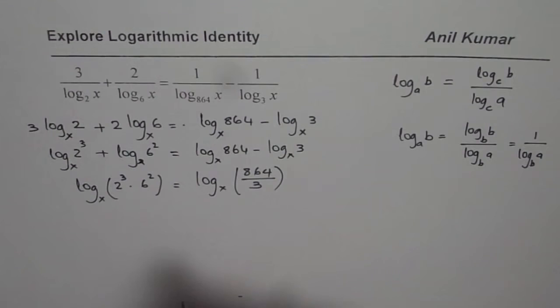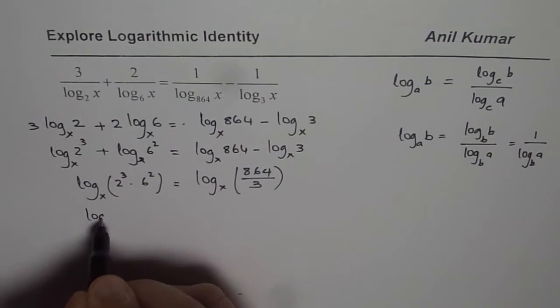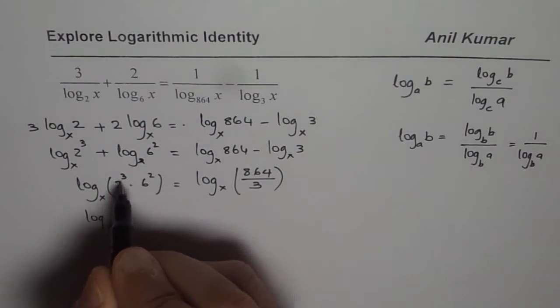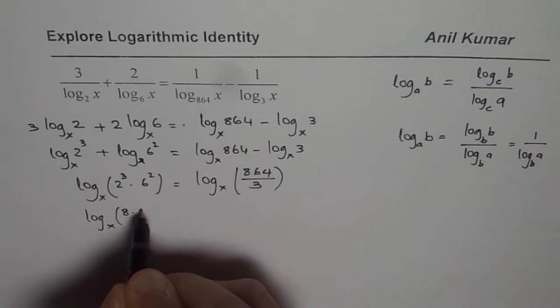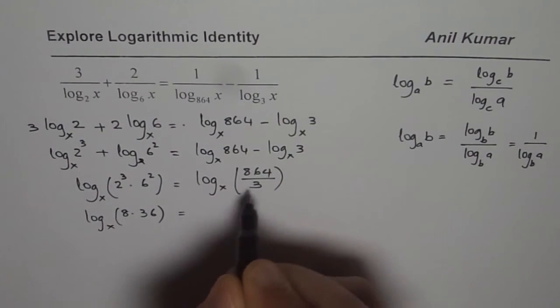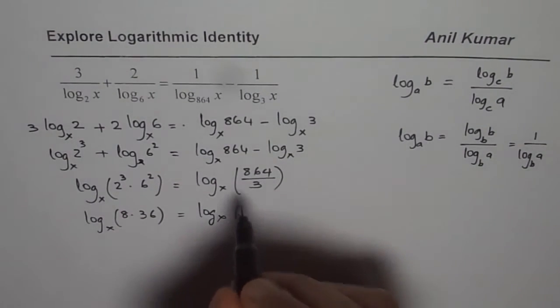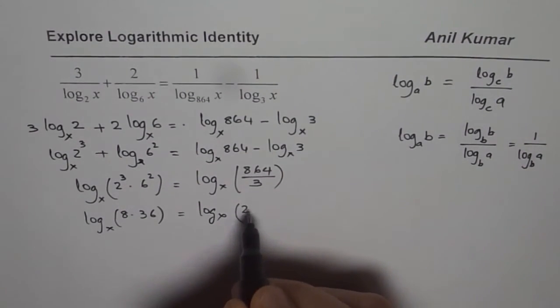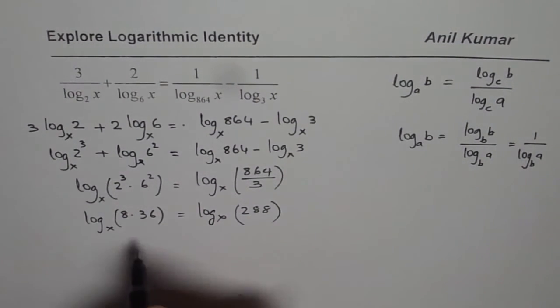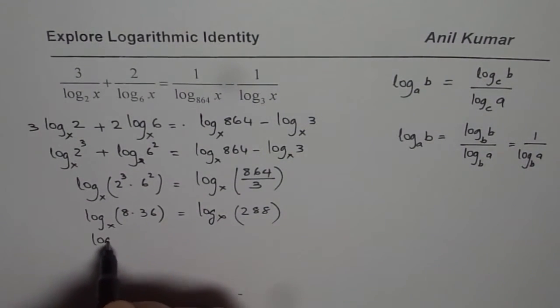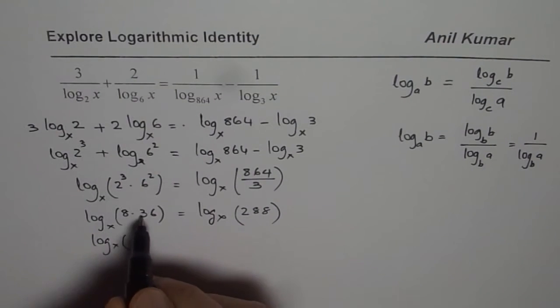So what do we get on the left side? On the left side we have log to the base x of 2 to the power of 3 is 8, 8 times 36. On the right side we can divide 864 by 3. So 3 goes 2 times 6, 26 means 8, 24 means 8. And here what do we get log to the base x of 8 times 36.